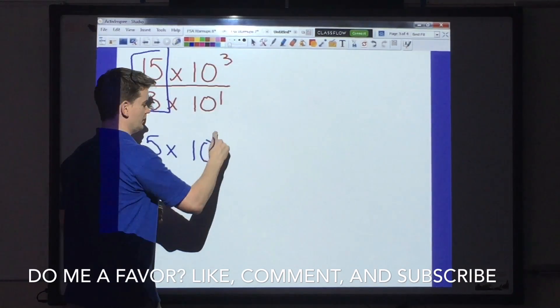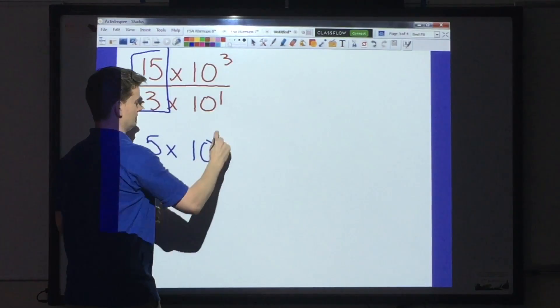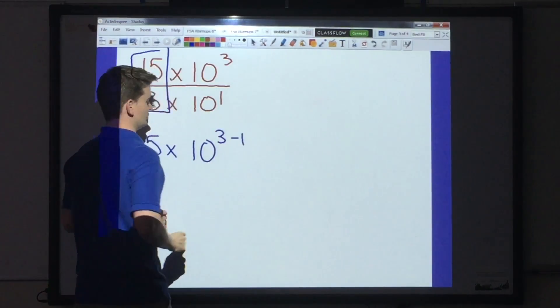So it's going to look something like this. 5 times 10. Whatever the numerator is, I am subtracting that from the denominator. 3 minus 1.